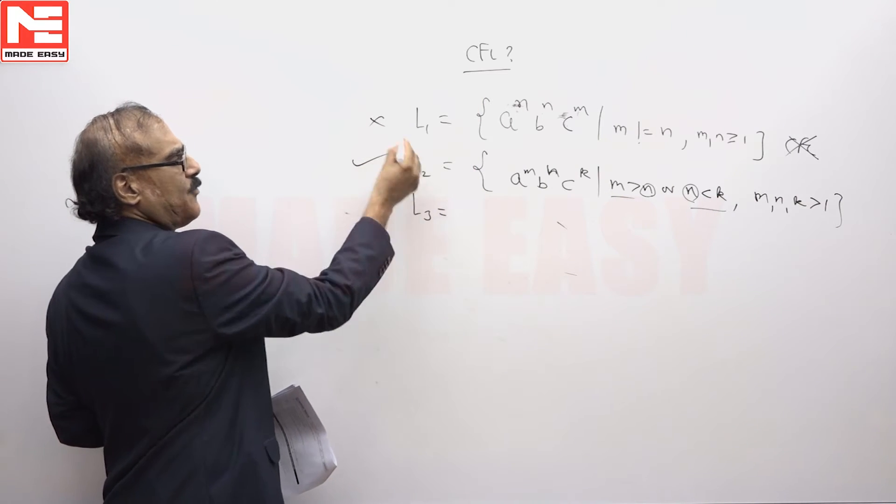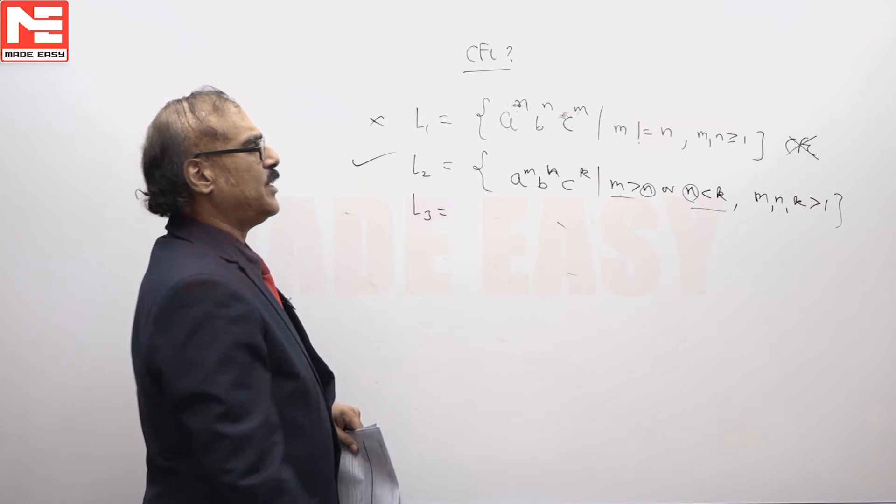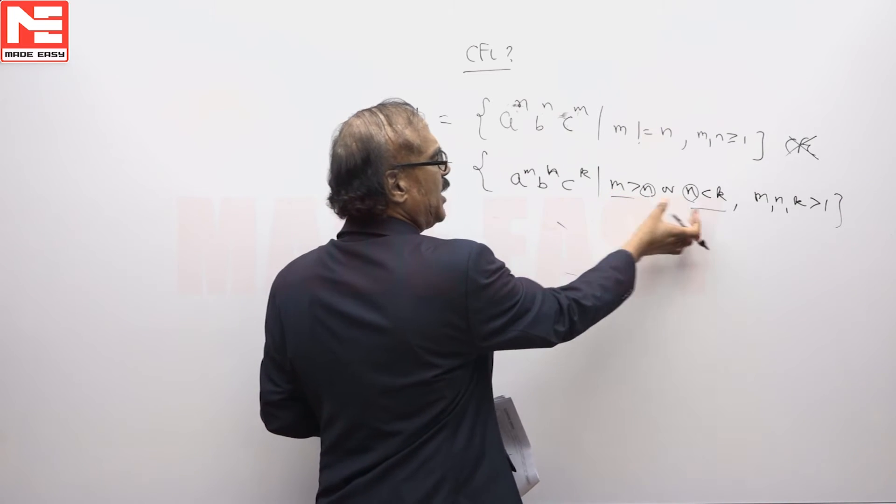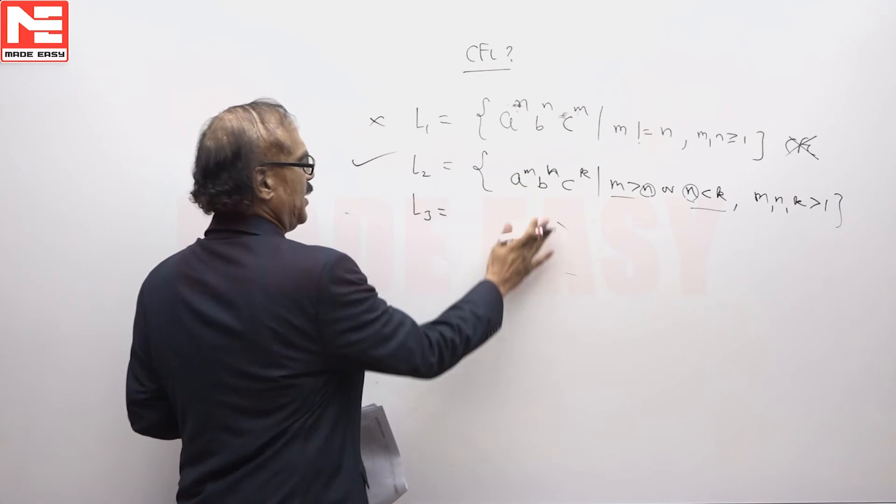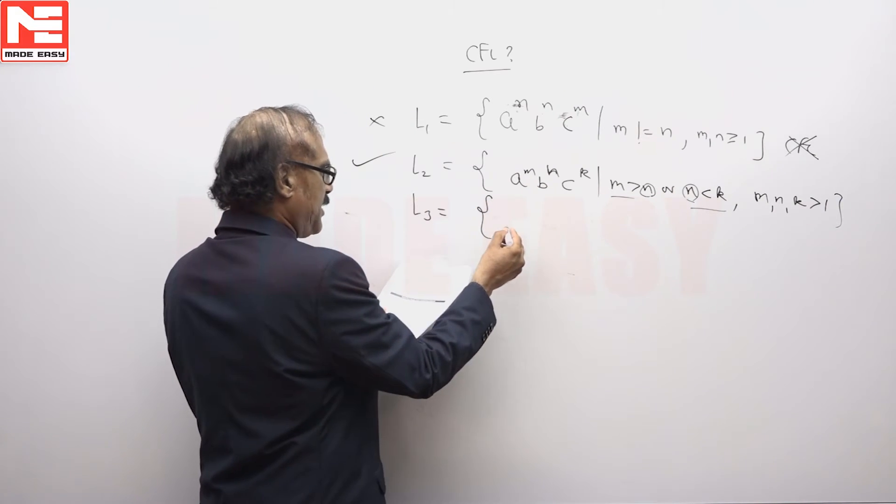Since we want to know which of the following is CFL, yes indeed it is a CFL. It is a union of 2 CFLs because this is a CFL, this is a CFL, and if there is a double comparison with OR it is a CFL. So clearly L2 is CFL.